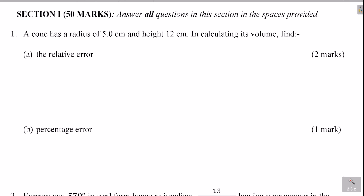To find the volume of a cone, here is the formula. Volume equals one-third π r squared times height. The measurements given are: radius is 5.0 centimeters and height is 12 centimeters.